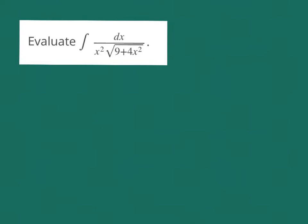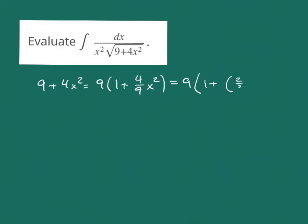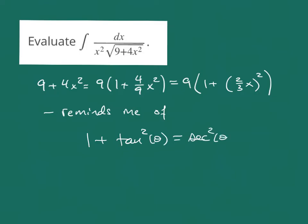What we're looking at in this case is really the expression under the radical. If we have 9 plus 4x squared, and I factor out a 9, that gives me 1 plus (4/9)x squared. If I rewrite that as (2/3 x) squared, then this reminds me of the trigonometric identity 1 plus tangent squared of theta equals secant squared of theta. That identity tells me what my substitution is going to be: tangent of theta equals 2/3 x.